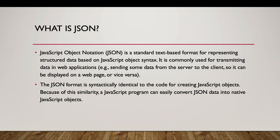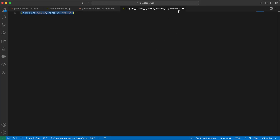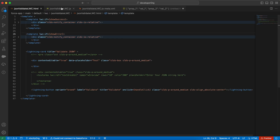An example JSON format has a first name and a last name — this is called a JSON object. Within the object we have two keys; JSON is essentially a collection of key-value pairs. So first name is 'John' and last name is 'Doe' — this is a valid JSON format. A JSON validator is a tool that checks if a JSON document adheres to the syntax and structure rules specified by the JSON format.